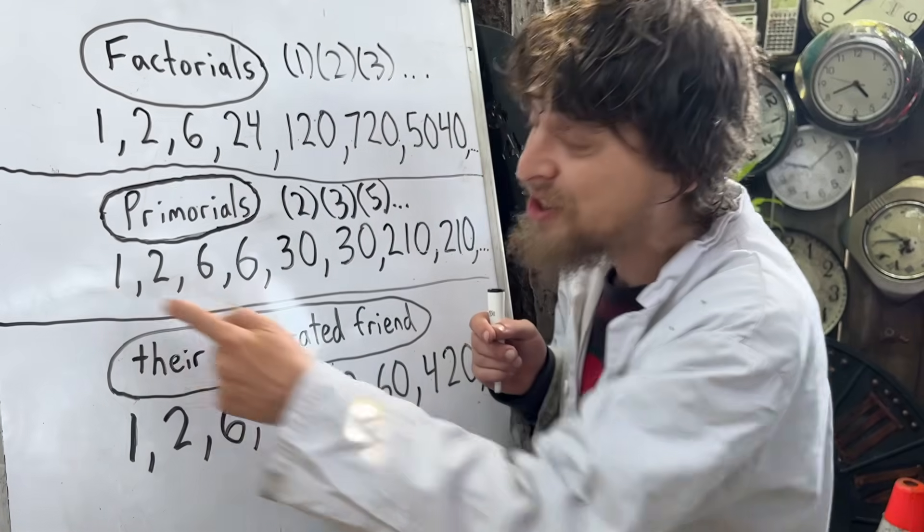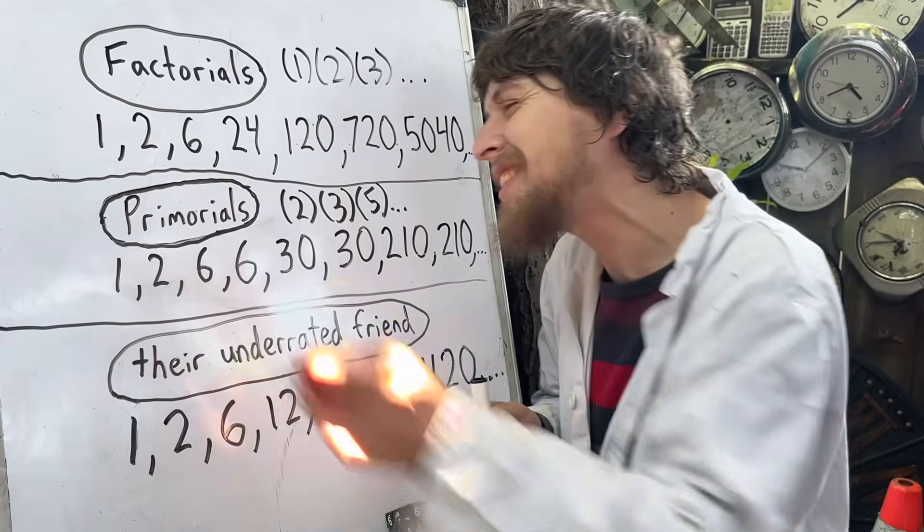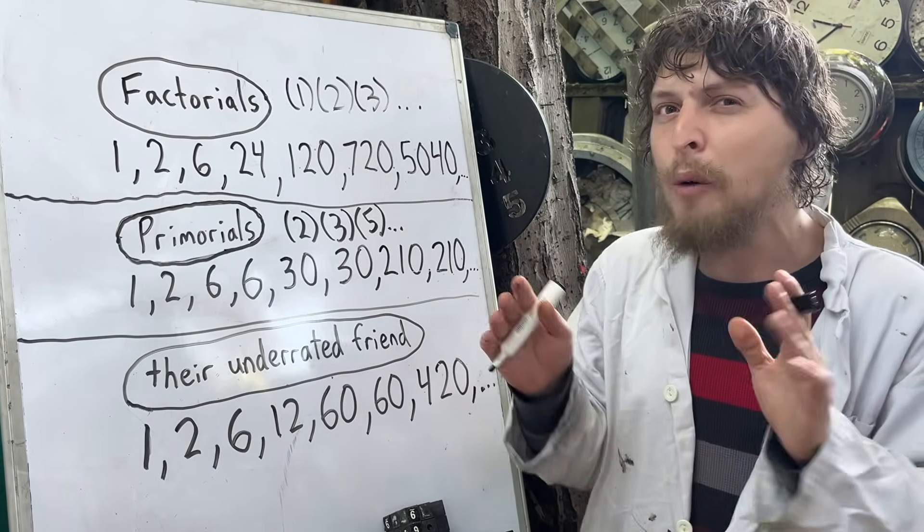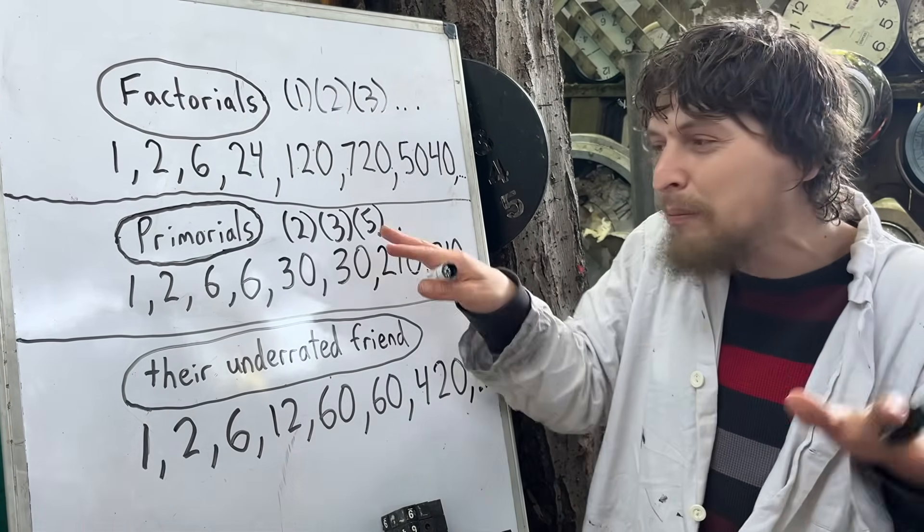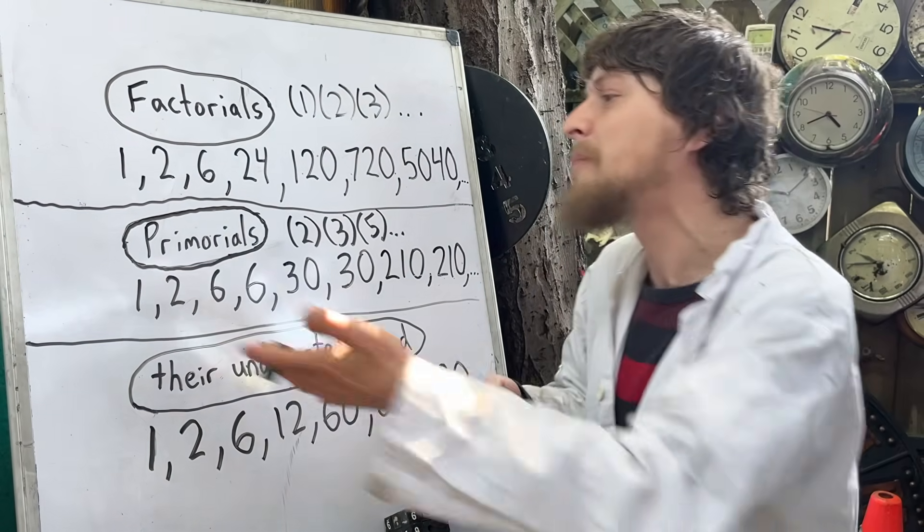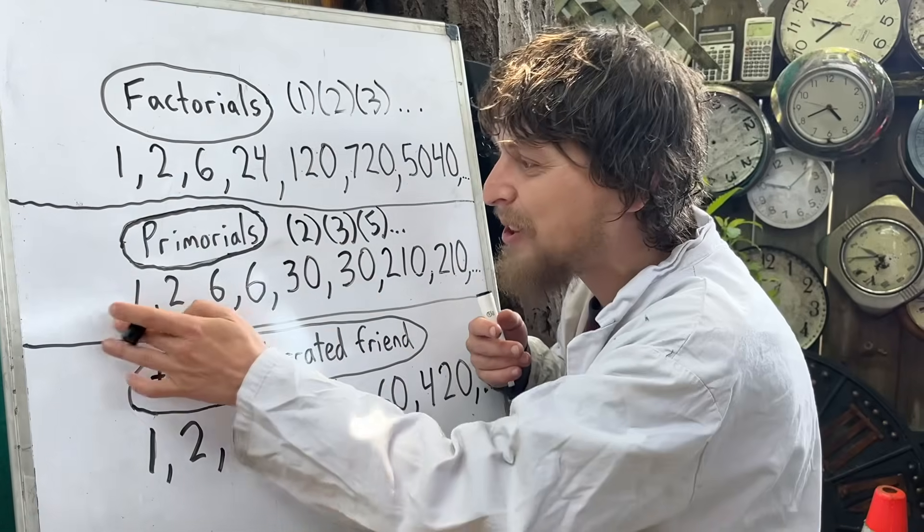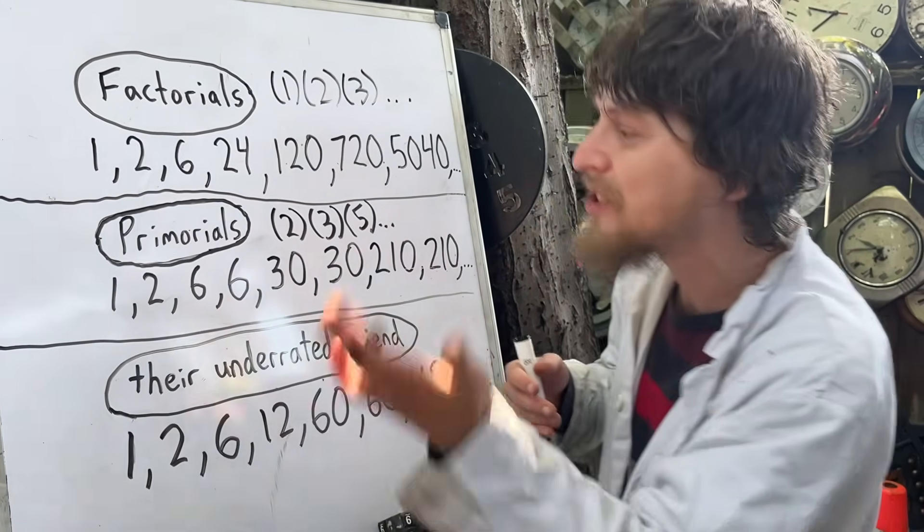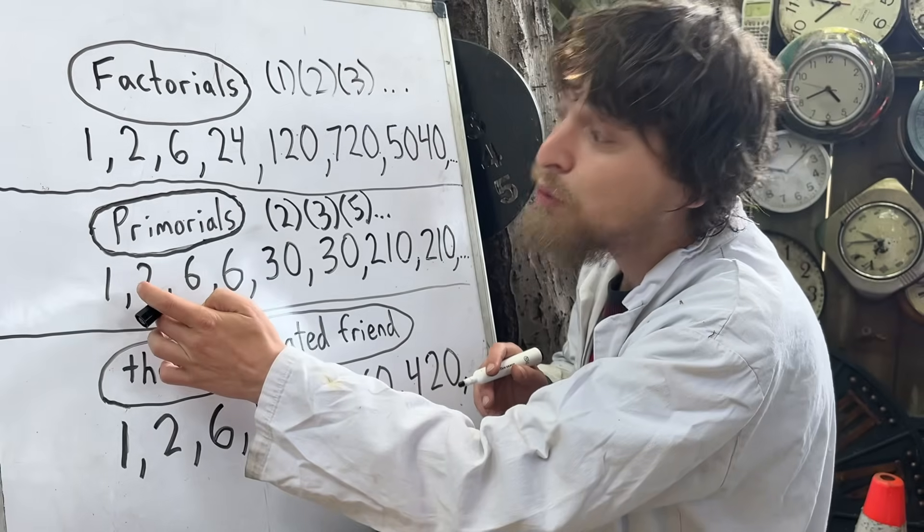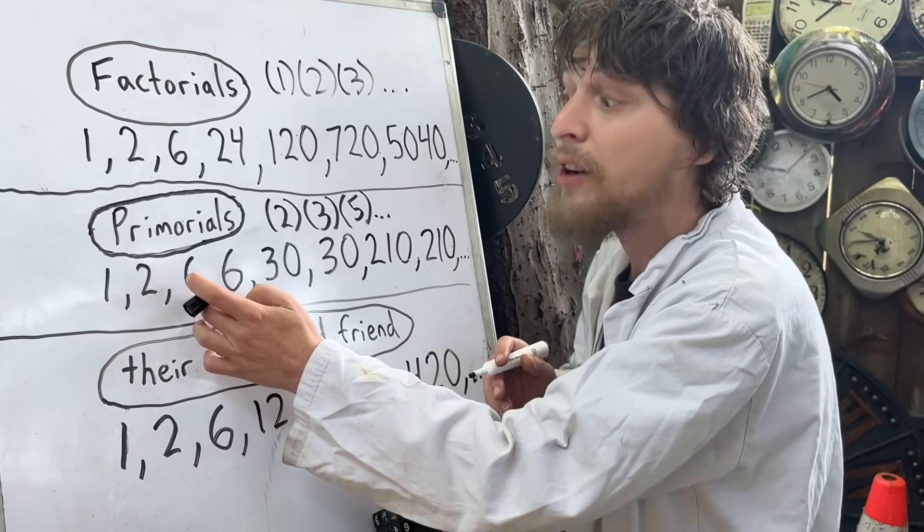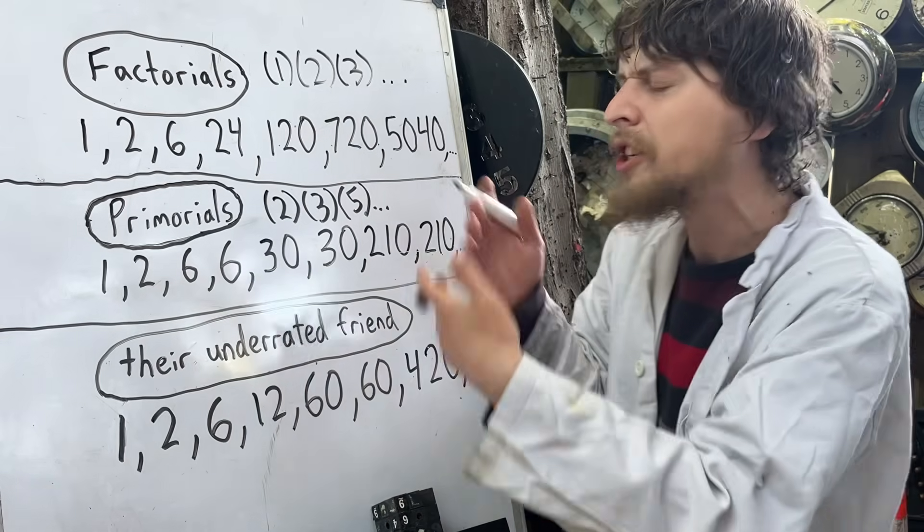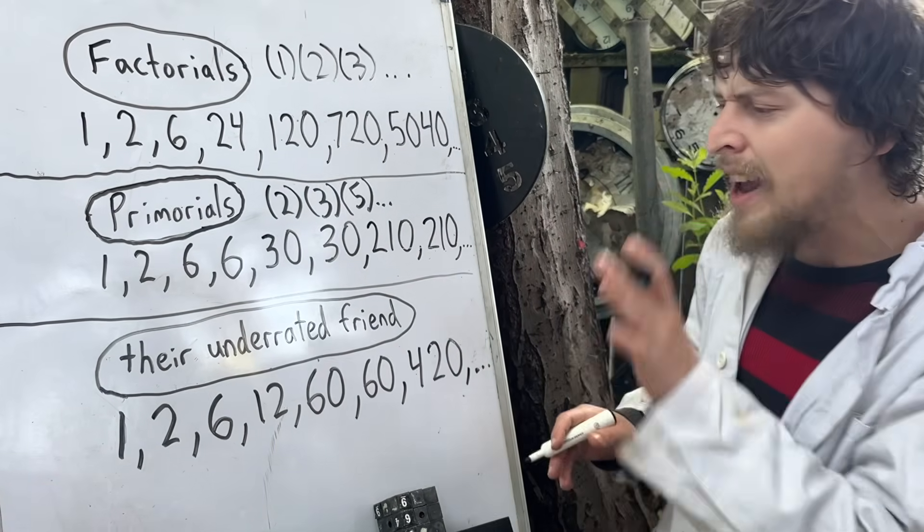And for the first term, we do get a 1 there, because although 1 does not have any prime factors, when we're multiplying an empty amount of things, we actually list the empty product, which is the multiplicative identity. But if that's confusing, you can pretend we started with the second term. Here we're looking at all the primes up through 2 multiplied, all the primes up through 3 multiplied, and all the primes up through 4 doesn't change anything.